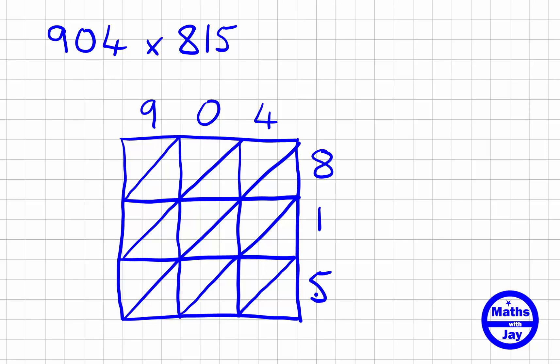Starting at the top left hand corner, I want to work out what's going to go in the top left hand box. I'm looking at the nine above the box and the eight to the right of the box, so I'm multiplying nine and eight together. That gives me 72, so I've got the seven and the two in the box like that.